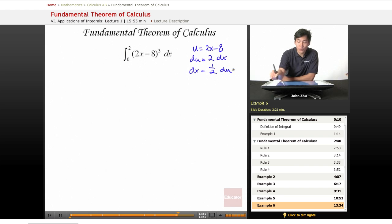So substituting that in, u cubed dx equals 1 half du. So we pull the 1 half out and become 0 to 2 u cubed du.